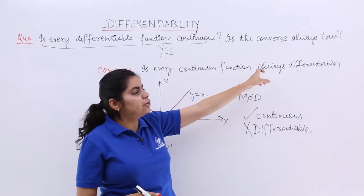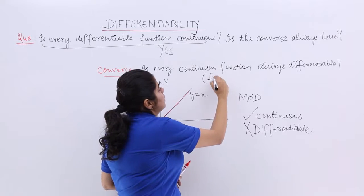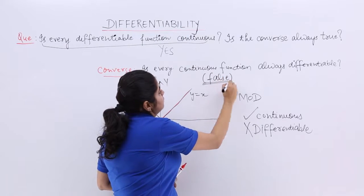So it means this is a continuous function but it is not differentiable. So this statement, every continuous function differentiable, is false, right?